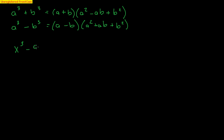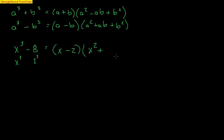Let's do an easy one to recognize: x³ minus 8. I notice x³ — cubes might be working here. Is 8 a cube? Yes, because 2³ makes 8. So my a value is x and my b value is 2. Using the difference of cubes formula, I get (x minus 2)(x² + 2x + 4). The x² comes from a², the 2x comes from a times b which is x times 2, and the 4 comes from b² which is 2 squared.